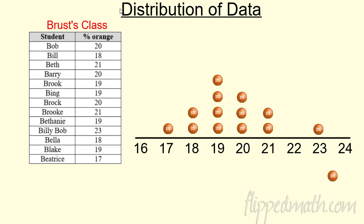Excellent — I think I got everybody. So why is this nice? From the table I can't really tell much of anything. But when I graph it, what can you tell quickly? It looks like most people had 19 or fell right around 19. One person had a lot of oranges. But really, most people are between 18 and 20. So it's a quick way to see how the data is distributed.